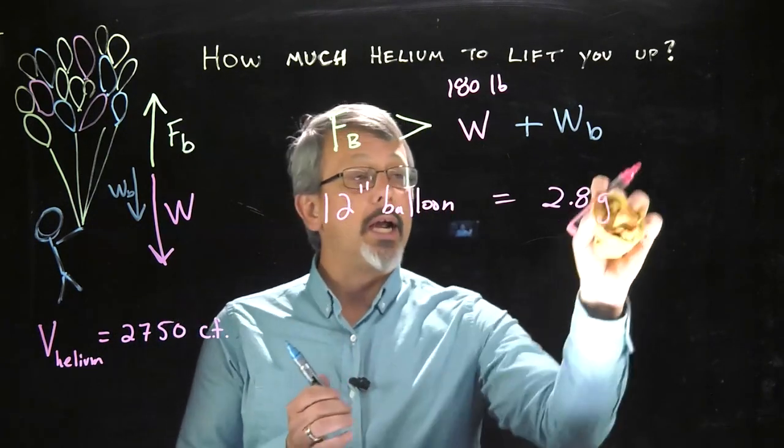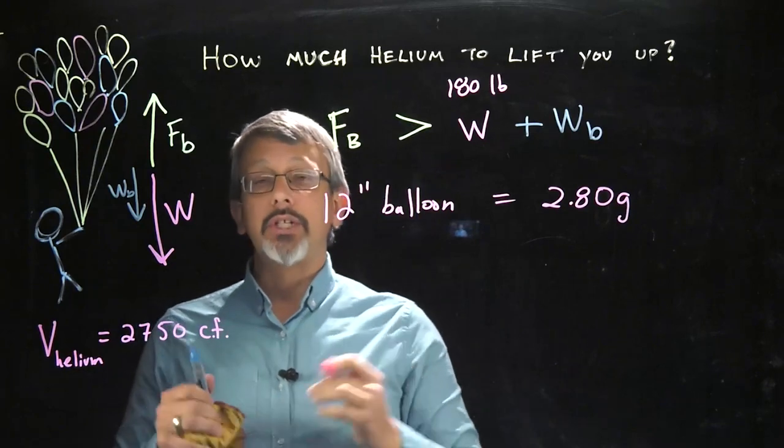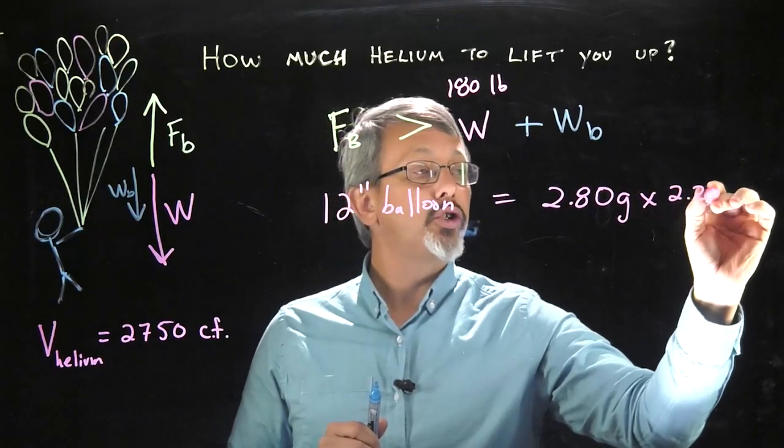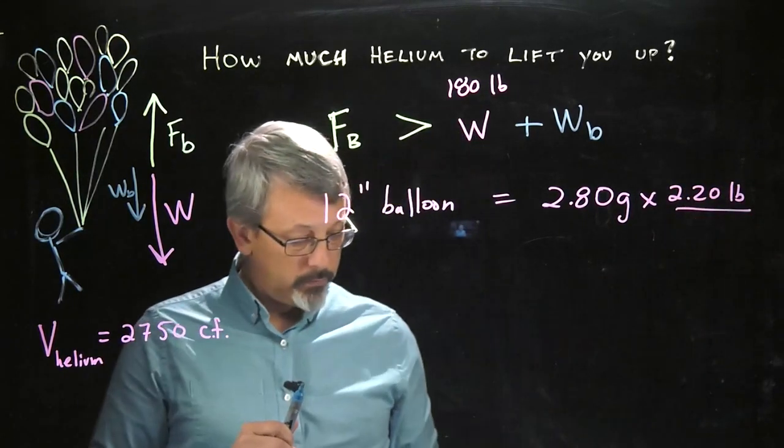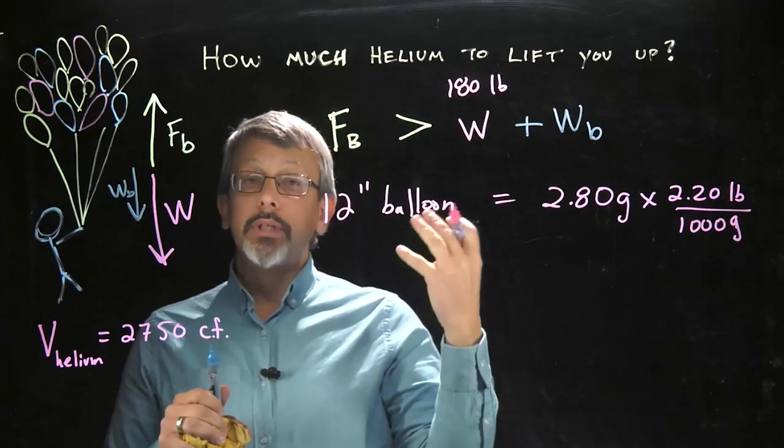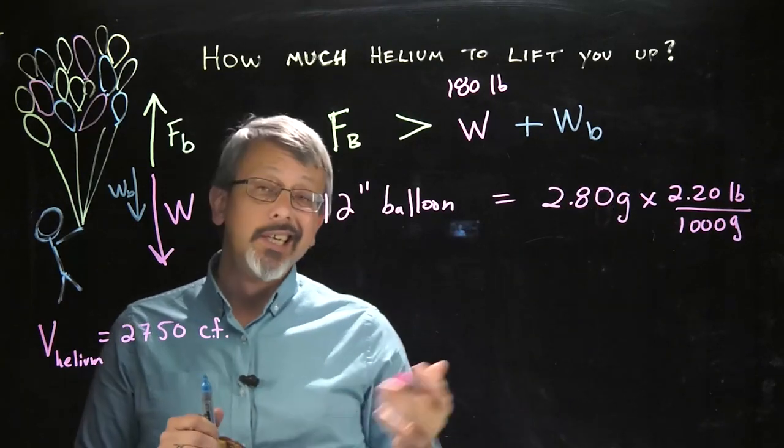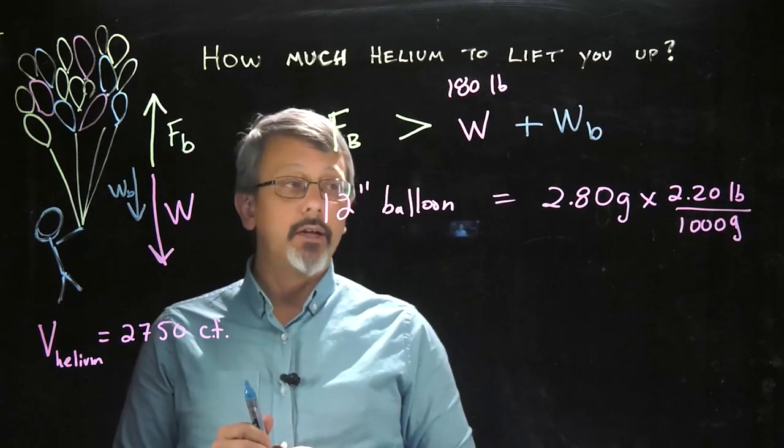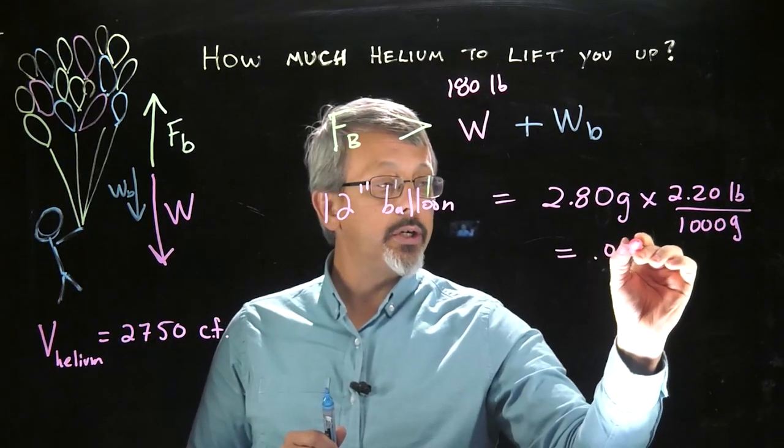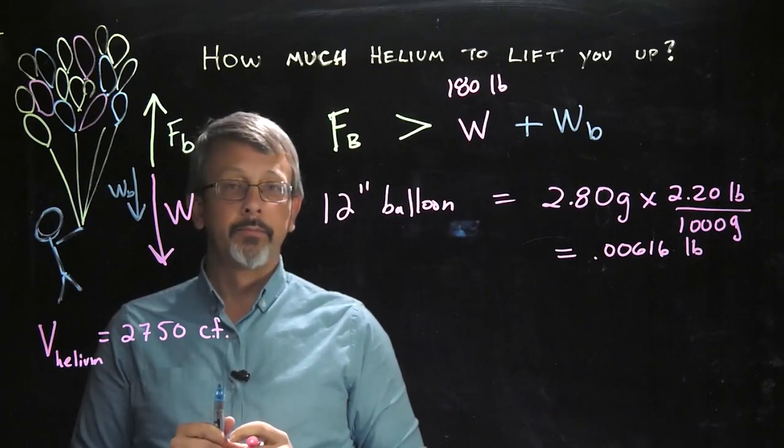I'll be a little bit more careful with my significant figures. I feel confident in saying that this was 2.80 grams. But I can't have any more significant digits than that based on my measurement. So I will multiply that by our value of 2.20 pounds per 1,000 grams per kilogram. Notice there are more precise values to convert pounds to kilograms, but because I only have 3 significant figures here, it's really only necessary to have 3 significant figures in my conversion. And when I multiply those two things together, I get a weight of 0.00616 pounds for a single balloon.